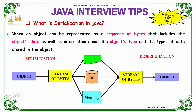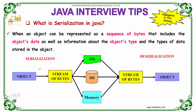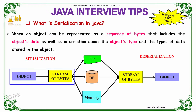What is serialization in Java? An object can be represented as a sequence of bytes that includes the object's data as well as information about the object's type and the types of data stored in the object. This is known as serialization. In serialization, the object is represented as a sequence of bytes — a stream of bytes — which includes the object's data, information about the object's type, and the types of data that can be stored in the object. These are gathered, further processed, and stored in a file, database, or memory.